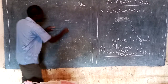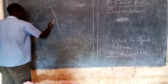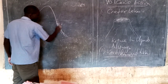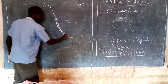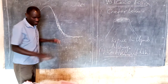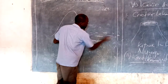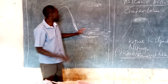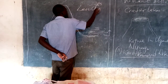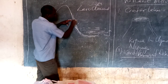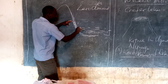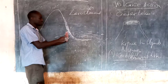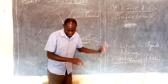When lava flows, it blocks the flow of a river and then a lake is formed — called a lava dam lake. It blocks the river from flowing elsewhere, and this lake that is formed is what is known as a lava dam lake.